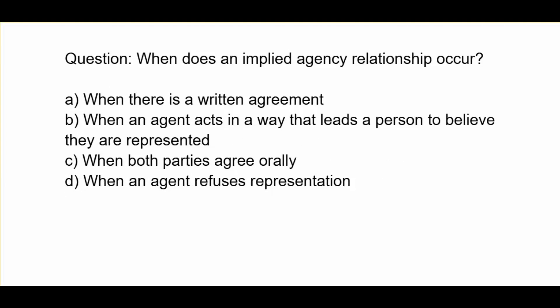C. When does an implied agency relationship occur? A. When there is a written agreement. B. When an agent acts in a way that leads a person to believe they are represented. C. When both parties agree orally. D. When an agent refuses representation.